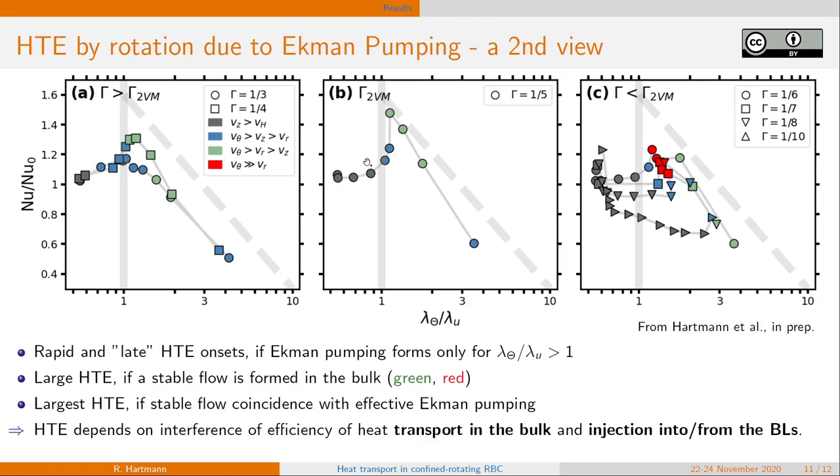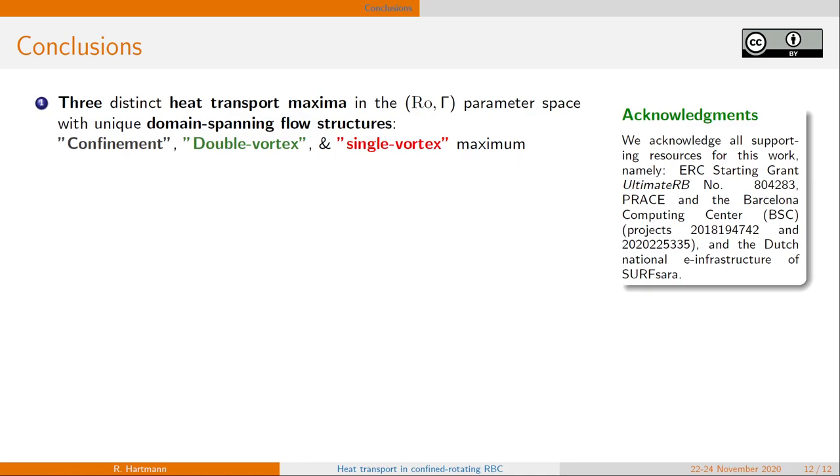Overall, that means that the heat transport depends on the interference of efficiency of heat transport within the bulk and the injection into and from the boundary layers.